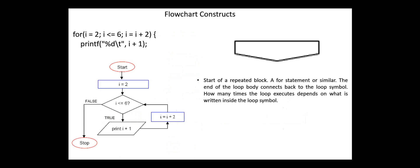The four constructs can be flowcharted using the basic flowchart symbols. For example, to flowchart a loop, we can assign the initial value to i, then we check if i equals 6 — we exit the loop, otherwise we print i plus 1. After that, i is incremented and the condition is tested again. However, there are several symbols used for loop constructs. For example, this symbol starts a repeated block — a for or a while statement. The end of the loop body connects back to the loop symbol.